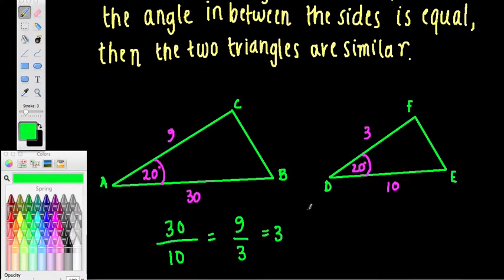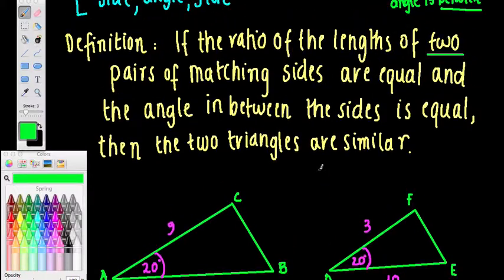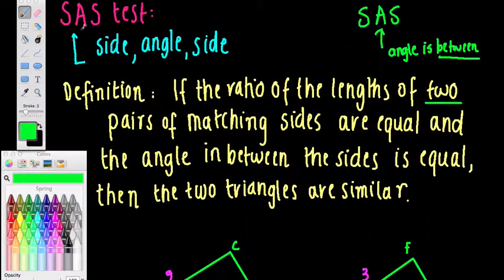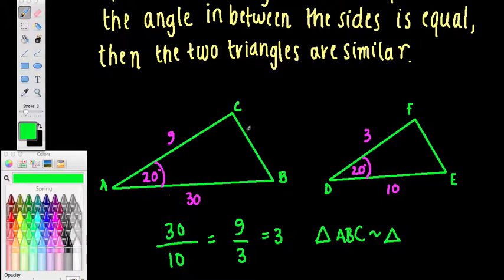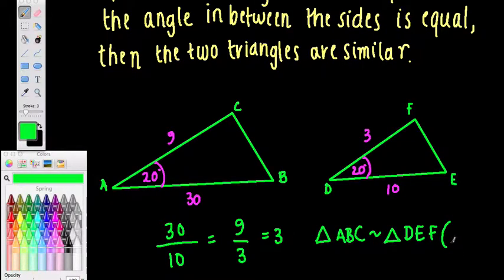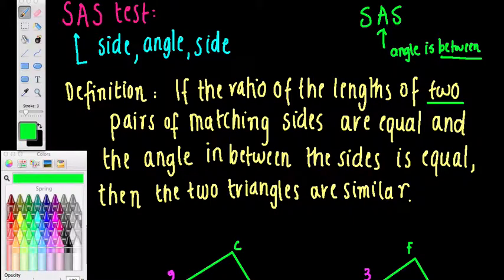Fantastic — we know these triangles are similar because they satisfy the Side-Angle-Side test. Now I'll write the similarity statement: Triangle ABC is similar to triangle DEF, because A, B, C corresponds to D, E, F. In brackets we state the test that proves similarity, which is the SAS test.